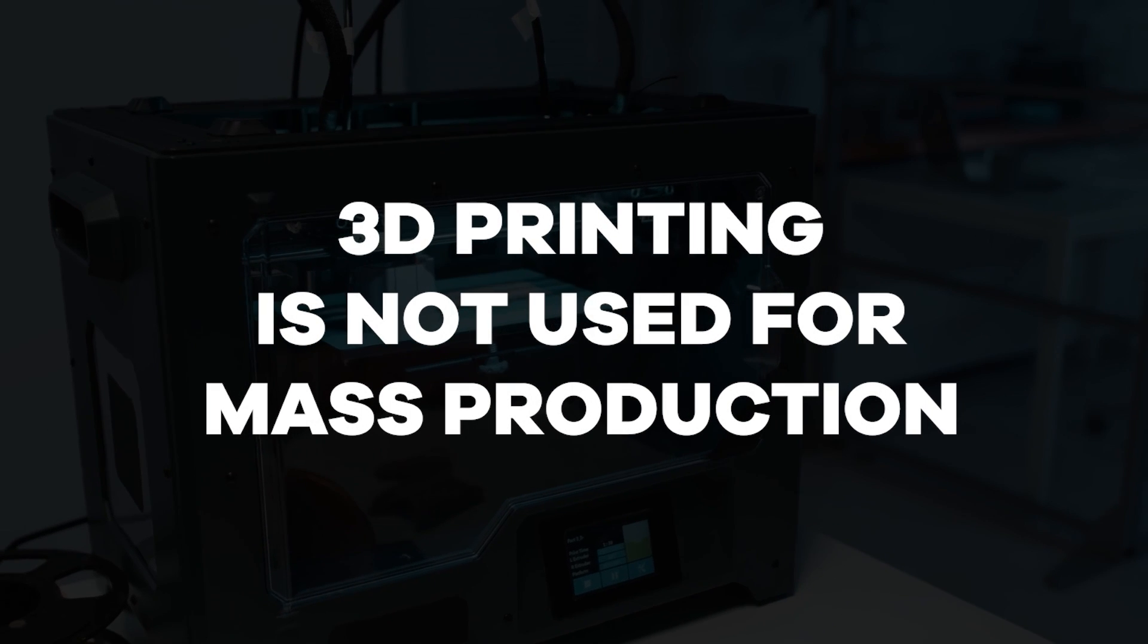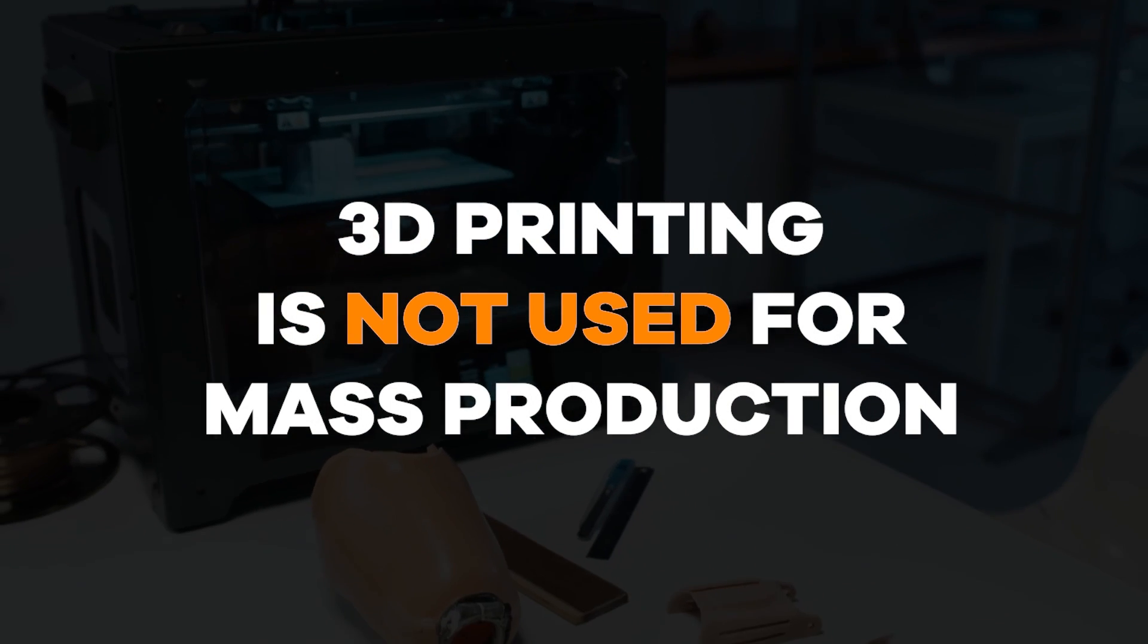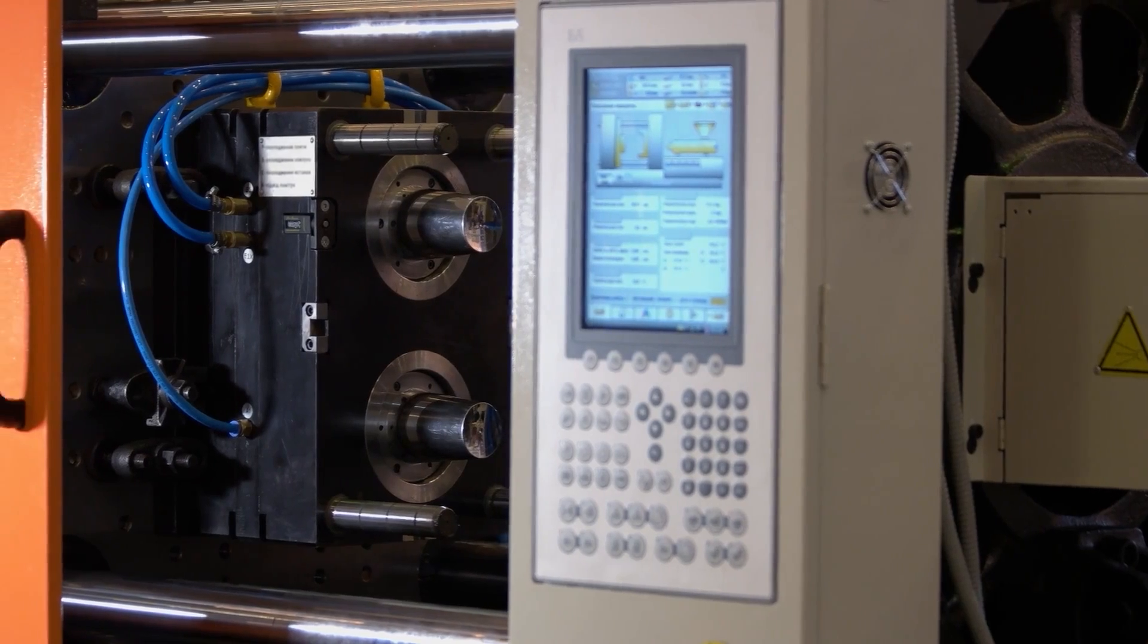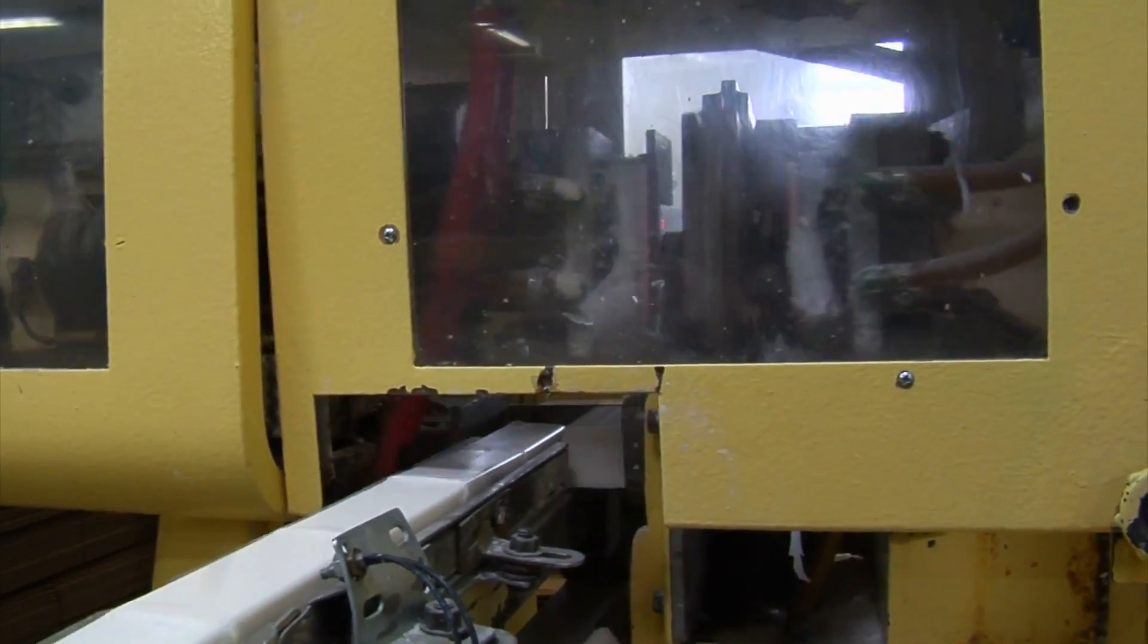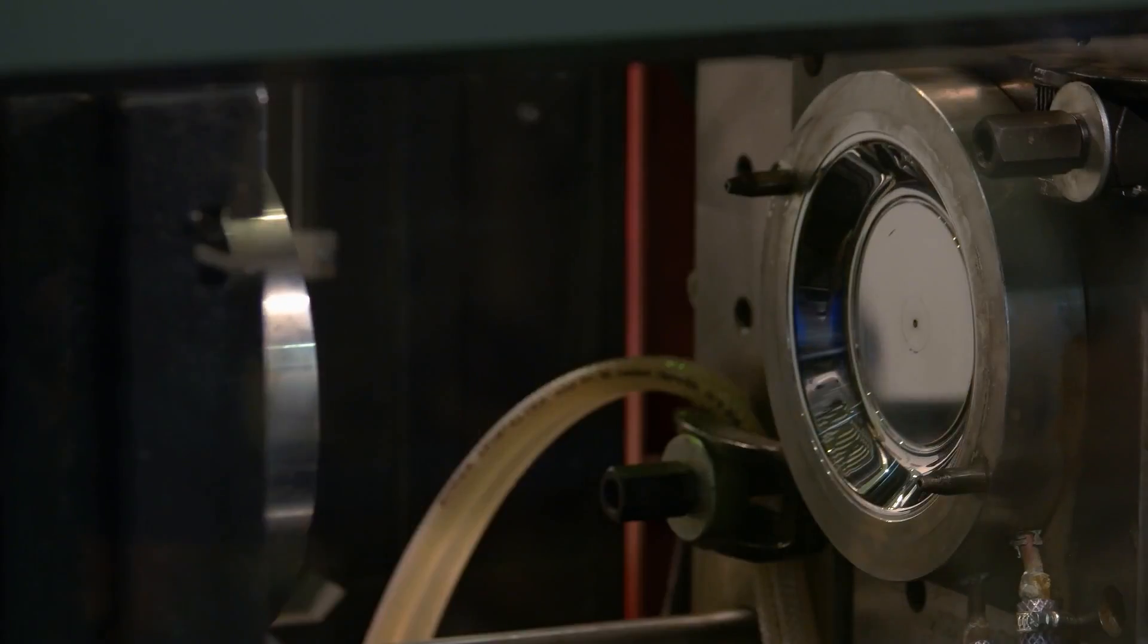3D printing is not the technology that's used for mass production. High-pressure injection molding is what you use for production, and it's radically different than 3D printing. Most importantly, injection molding has lots of design rules and limitations that must be strictly followed when designing your product.